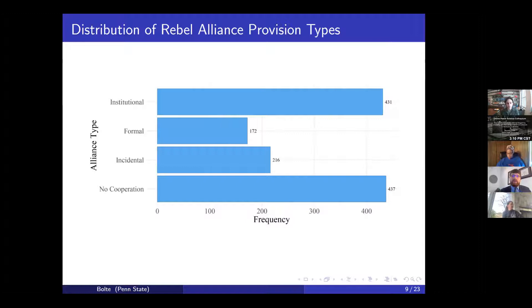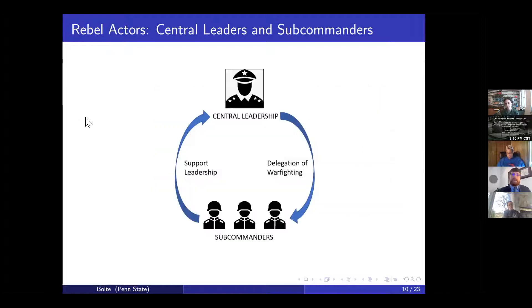Beyond the conceptual contribution of this framework, the next contribution I want to make is theoretical. I start from the observation that decisions about how to cooperate are ultimately made by the leadership, and that rebel leaders don't make strategic decisions in a vacuum. Instead, rebel leaders often need to retain the support of lower-level military officers — which I'll refer to as sub-commanders — who are responsible for directly supervising and commanding factions in battlefield operations. I argue that this internal distribution of power is yet another source of credibility that can affect the types of alliances rebel leaders can commit to.